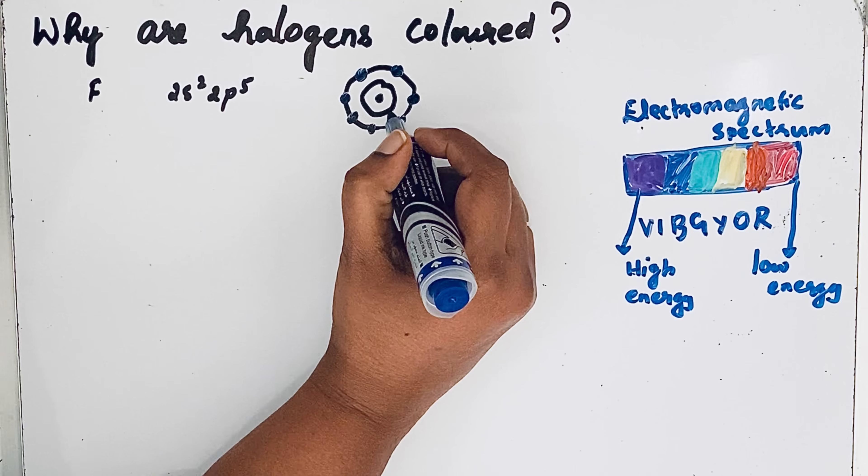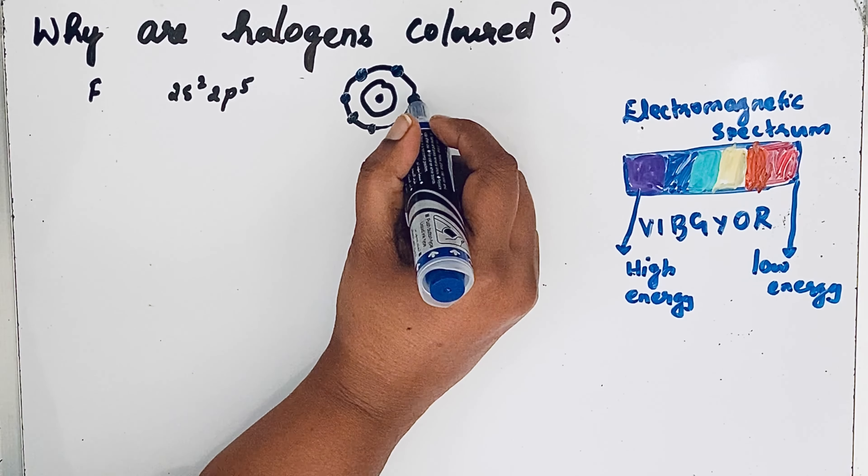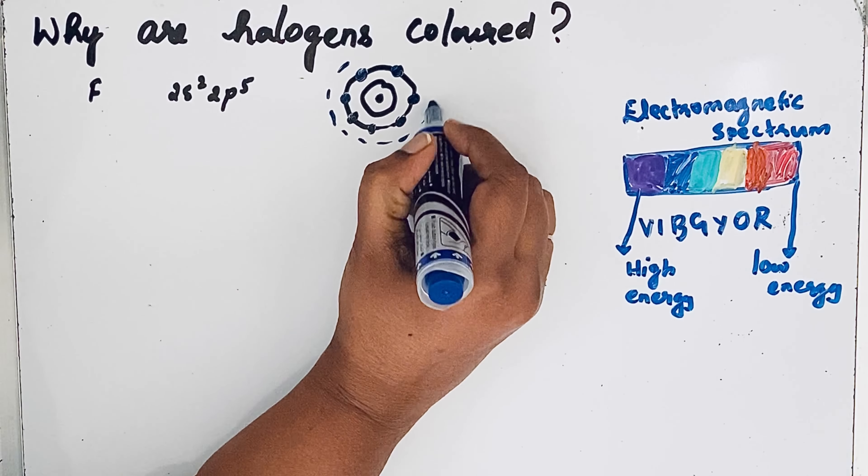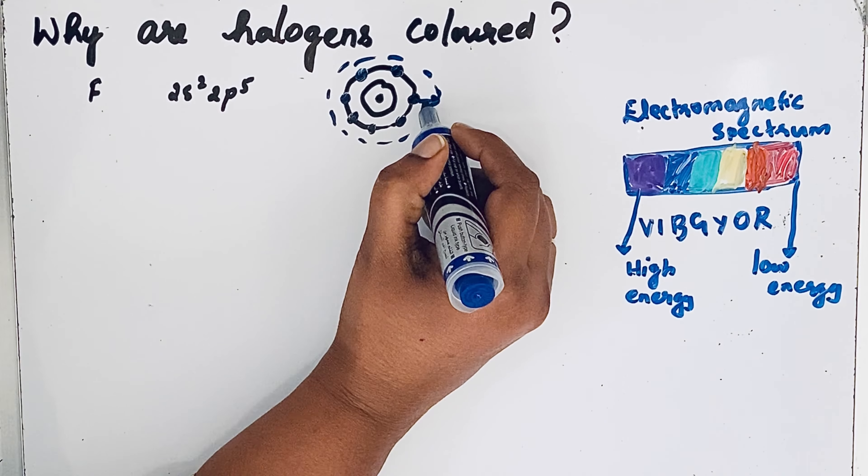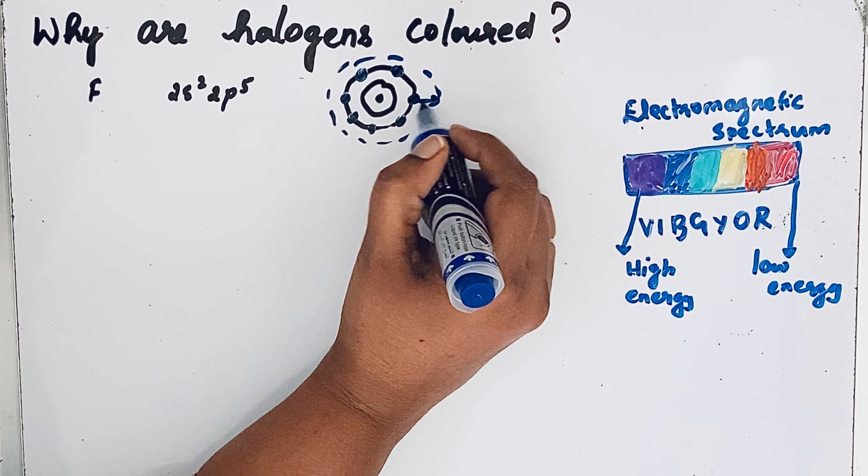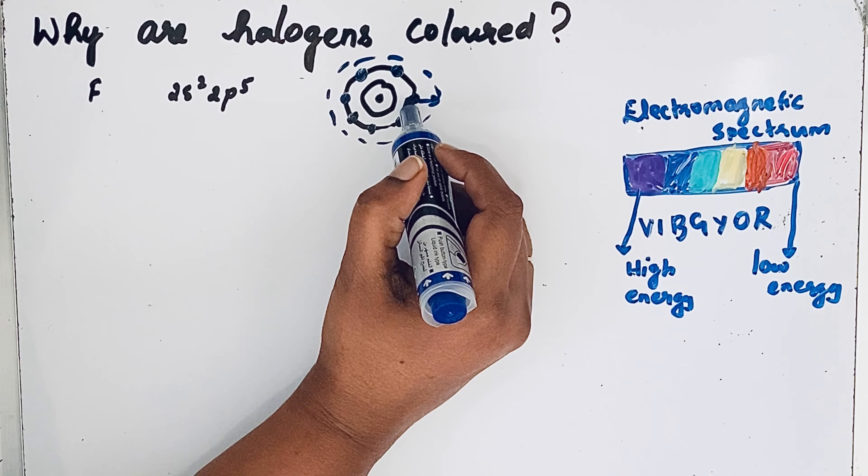These electrons, when they absorb radiations, try to move to a higher orbit - to the third orbit. When they move to the third orbit, it is an unstable stage, so immediately they want to come back to the second orbit. These electrons need higher energy.